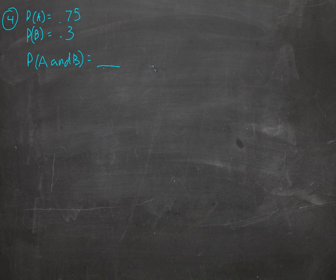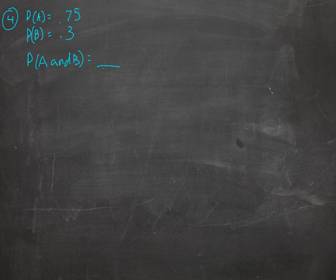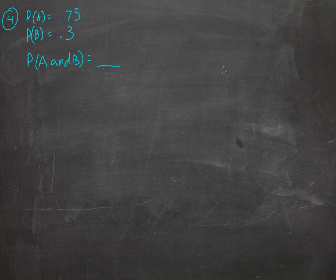Let's get started on 10.5. In 10.5 we have one thing happening, one event happening, and then another thing happening, as opposed to 10.4 where just one thing was happening that might have had a few things true about it — like you pull a card and the card was a king and a spade. But here we're going to look at drawing a king, then drawing a spade — something like that.